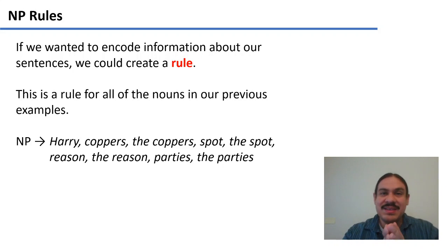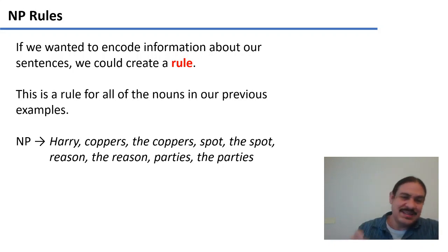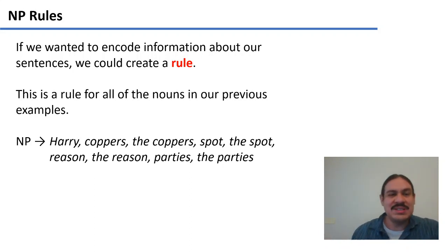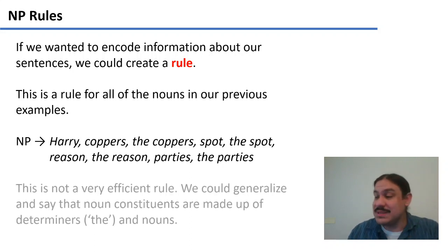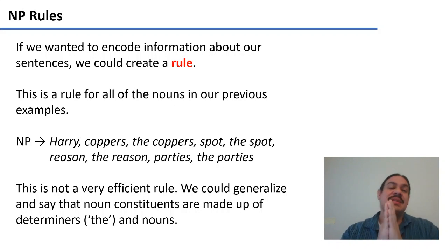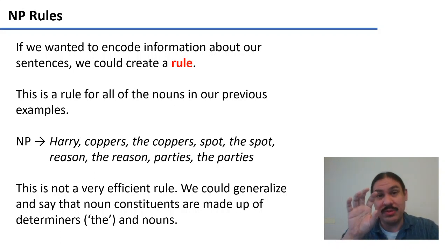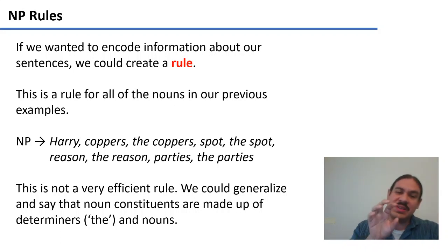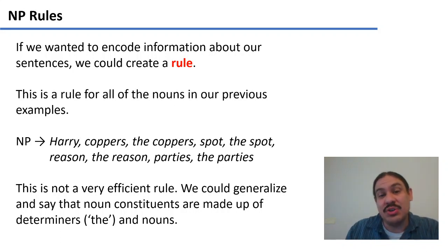We could make a rule that said a noun phrase is any of these — Harry, coppers, the coppers. But as you are no doubt noticing, this rule is not the most efficient one. We could add a few generalizations, such as the fact that noun phrases sometimes have a determiner, the word 'the', as in the coppers, the reasons, the parties, and sometimes noun phrases don't have a determiner.